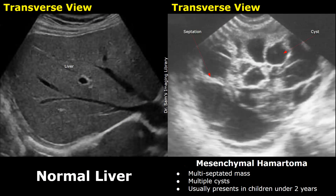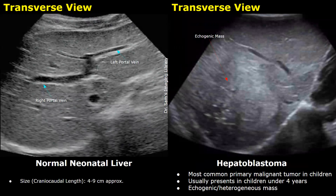A mesenchymal hamartoma is a benign tumor which appears as a multiloculated mass with multiple cysts, usually presenting in children under two years. Although benign, there is some risk of malignancy. A hepatoblastoma is the most common primary malignant tumor in children, usually presenting under four years of age. It also appears as an echogenic heterogeneous mass, with some overlap with the appearance of a large hemangioma, making it a somewhat non-specific finding.